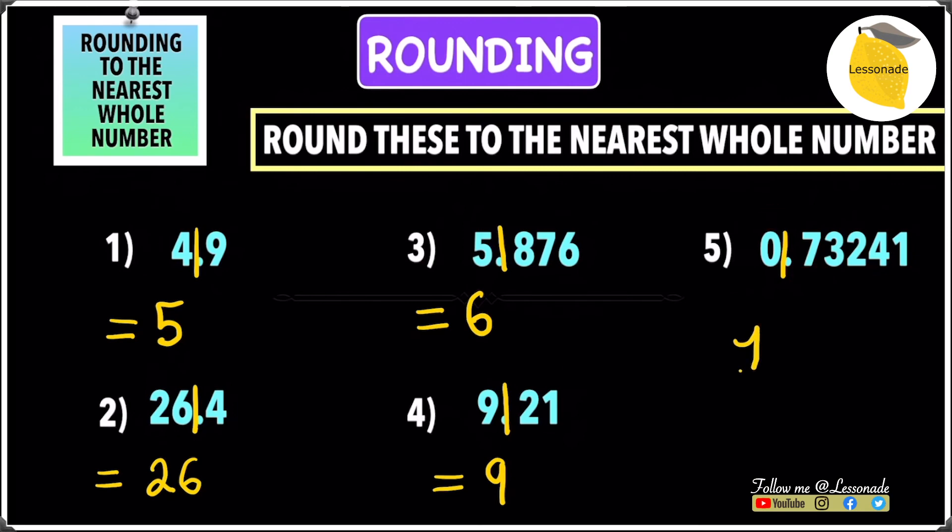For the remaining digits, which are 73241, you can replace them with zeros. You can put 0.000, but this makes no difference to the value, so you don't have to write it. Instead, just leave it as 1. Our answer is 1.